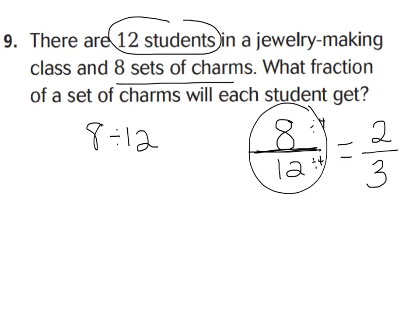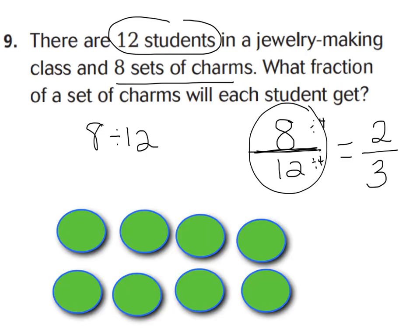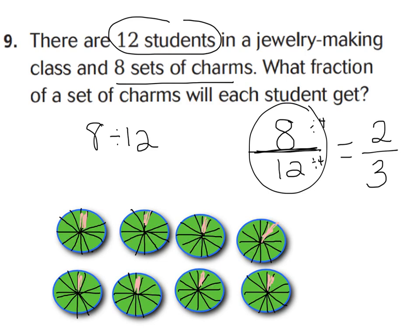Here's a model of why. Each one of these represents a set of charms — there are only eight sets but twelve students, so you can't give each student one whole set, which is why our fraction is less than one whole. Dividing each charm set into twelve parts, we give each student one part of each set: one-twelfth, two-twelfths, three-twelfths, four-twelfths, five-twelfths, six-twelfths, seven-twelfths, eight-twelfths — which is why eight-twelfths is the answer.